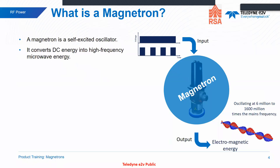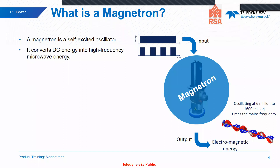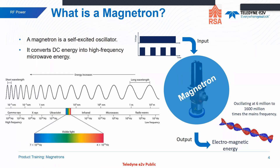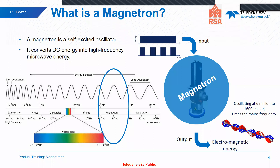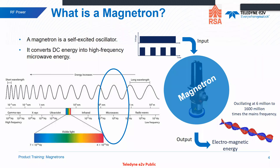So what is a magnetron? As I said, it's a self-excited oscillator. What it's doing is taking an input DC pulse from the modulator and turning that into electromagnetic energy in the microwave frequency range. Electromagnetic energy is all around us - you've got gamma rays and X-rays, visible light, and then the bit that magnetrons produce, which can be anywhere from one gigahertz up to many tens of gigahertz depending on the application. Predominantly for radiotherapy, we're looking at around the three gigahertz frequency range.